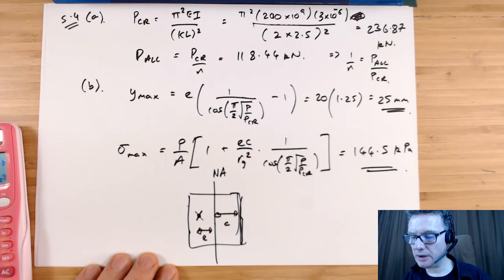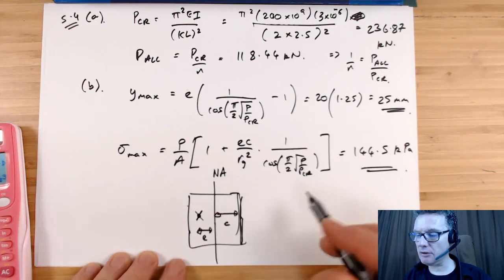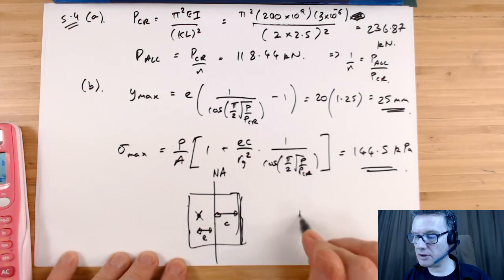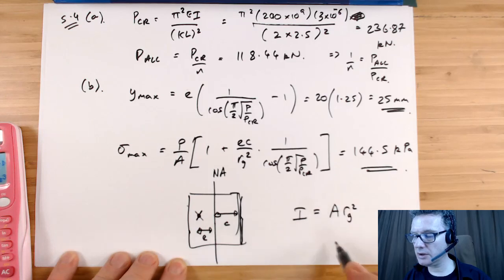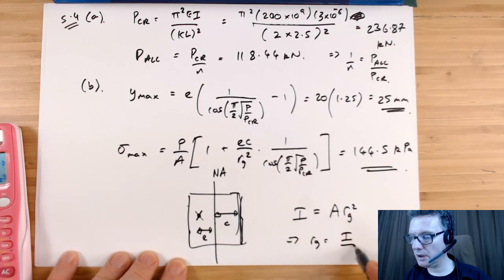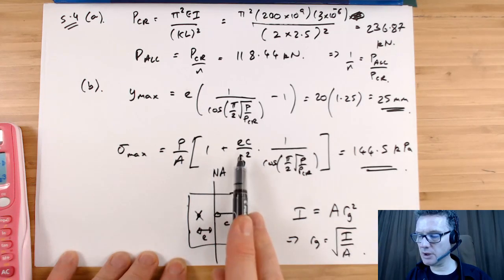So hopefully that explains the terms. R is radius of gyration, and you find the radius of gyration from I equals the cross sectional area times RG squared. So therefore RG equals square root of I over area. So hopefully that explains the e, the c, and the RG and where they all come from.